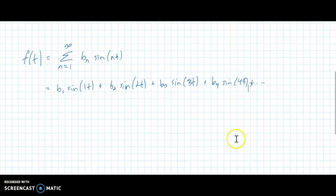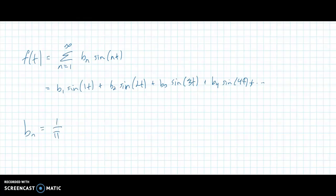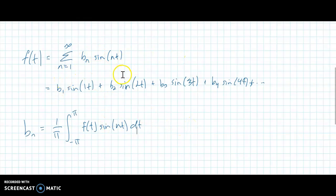So the question becomes, how do I find my b sub n? And this may seem really abstract at this point, but as we go through more and more of these as a group, it'll make sense why we're doing what we're doing. So we have a formula for b sub n — eventually we'll do formulas for a sub n as well. The formula for b sub n is 1 over pi, integral negative pi to pi, of f of t times sine of nt, dt. The a sub n is very similar; I'm not talking about it for now — we're just doing sines.